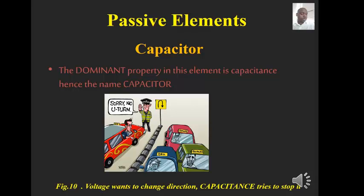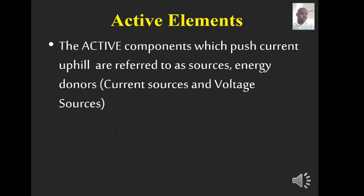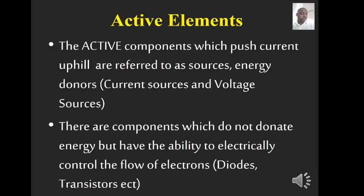Active components are different because the current flows uphill, so we need a source to give energy to the charges. We talk about current sources and voltage sources. There are also components like transistors and diodes which don't donate power but electrically control the flow of electrons — they are also termed active components because they act according to the direction and magnitude of the voltage or current supplied to them and actually need a source to operate.